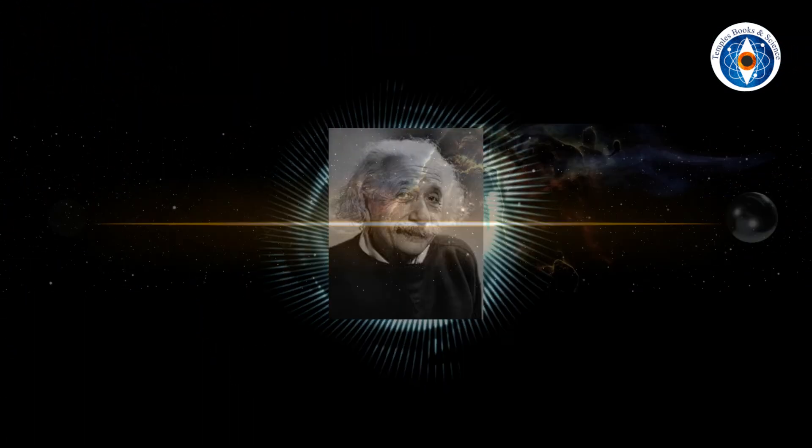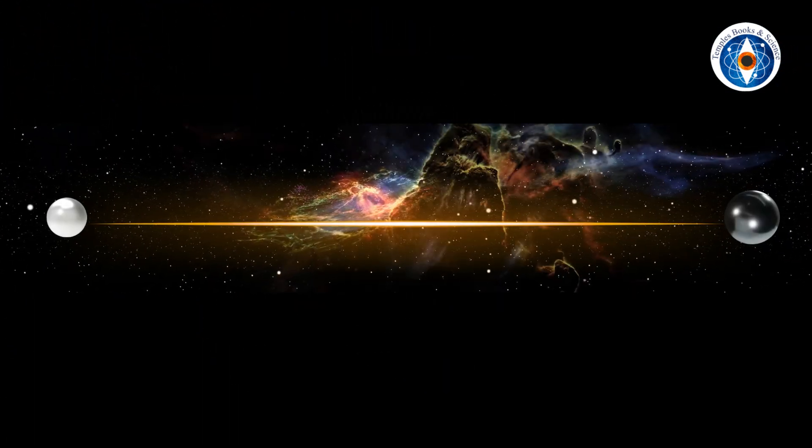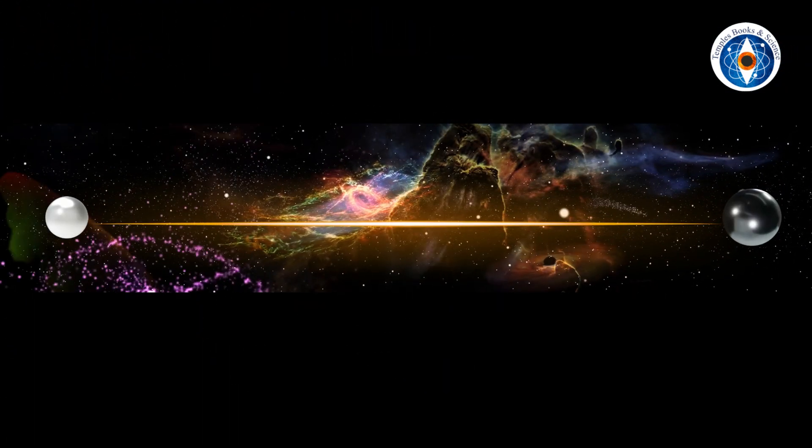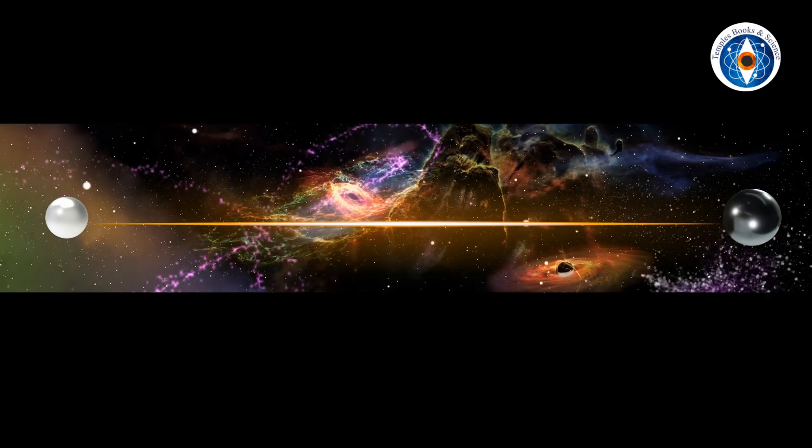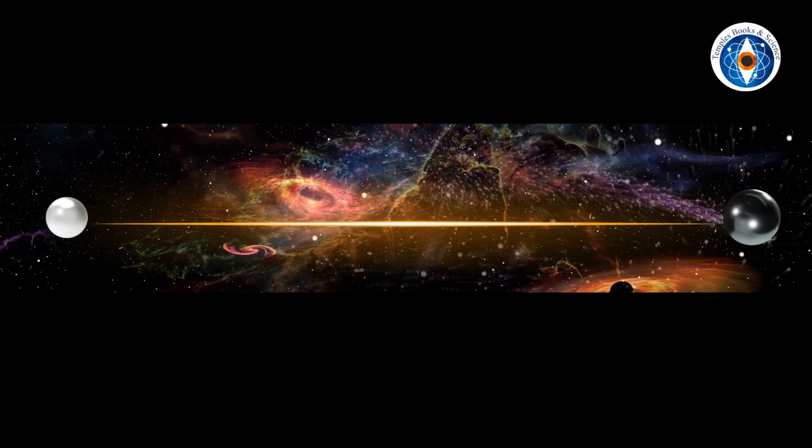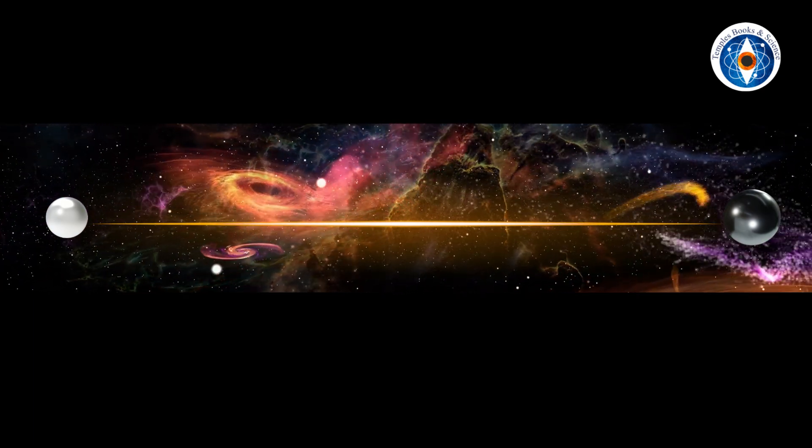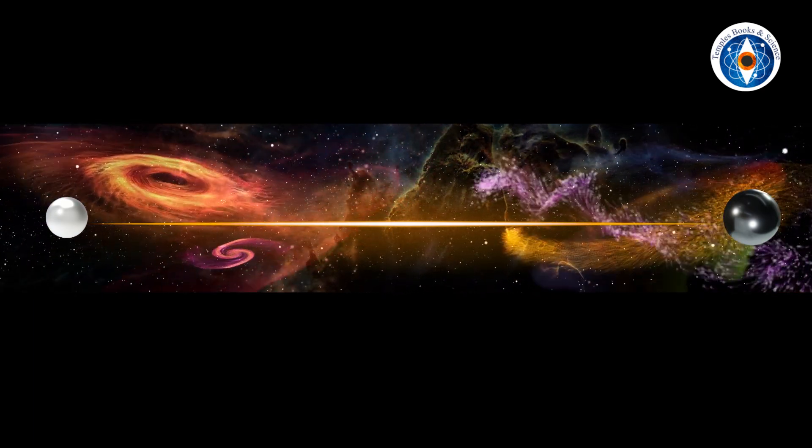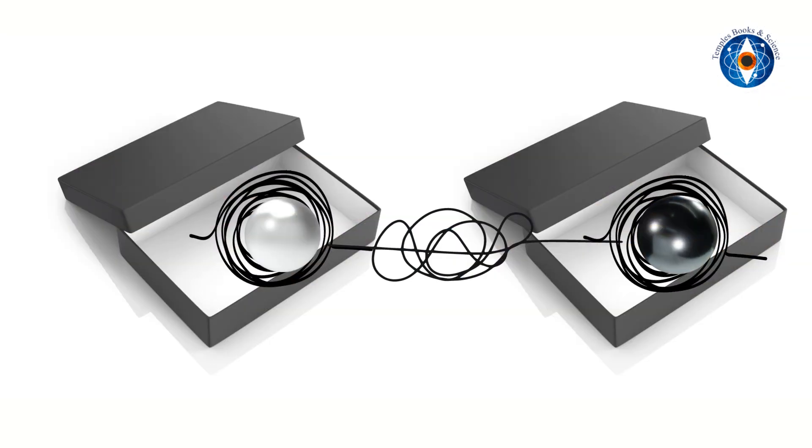Einstein vehemently disagreed with this conclusion. His own theory of relativity proved that nothing could travel faster than the speed of light. The behavior of entangled particles suggests that information is being shared between these two particles faster than the speed of light. How is this possible? So he came up with an alternate explanation for their behavior.